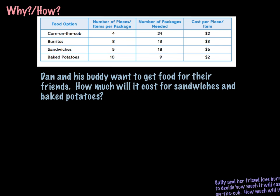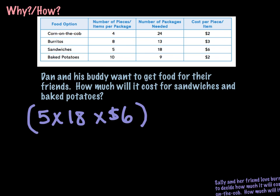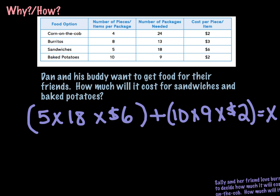So in order to set this problem up, we're actually going to take the sandwiches, which are going to be 5 times 18 times $6, and we're going to put that in parentheses. And we're going to add the baked potatoes, which will be 10 times 9 times $2 equals X. And this is how we would set up the problem.